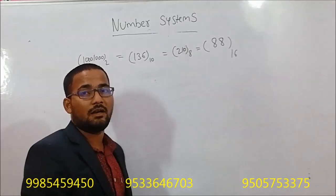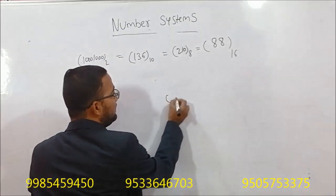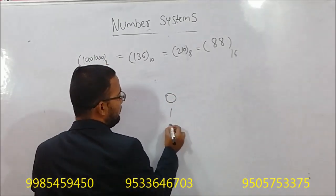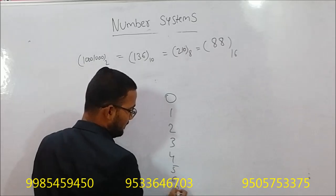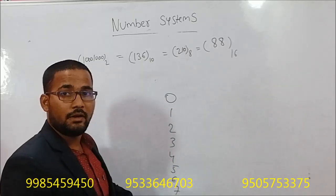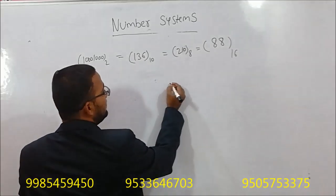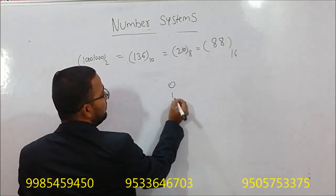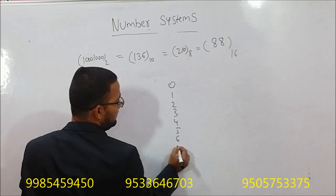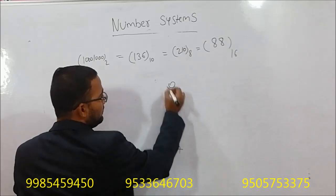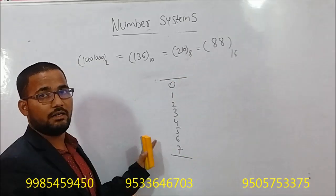Now we have to talk about number systems. The binary number system uses digits 0 and 1. The octal number system uses digits 0 through 7. We have to talk about the octal number in this particular system.